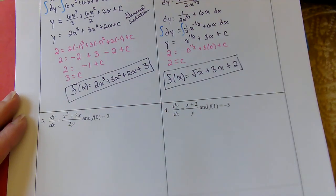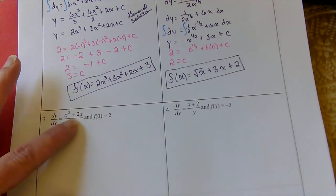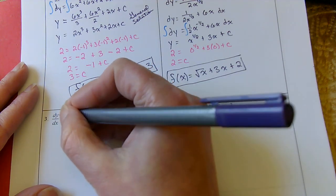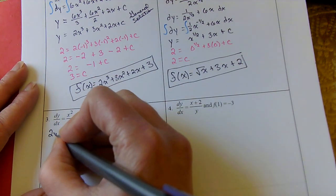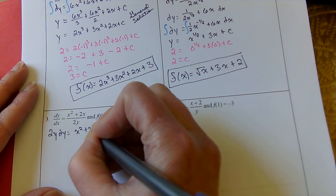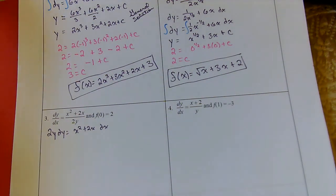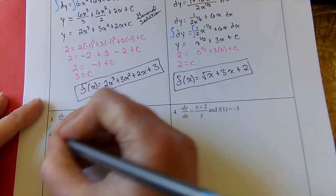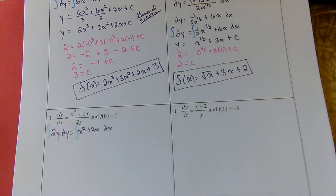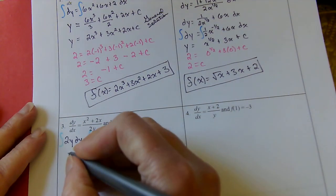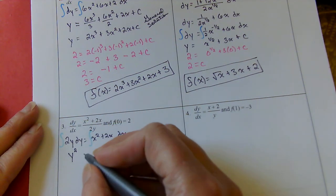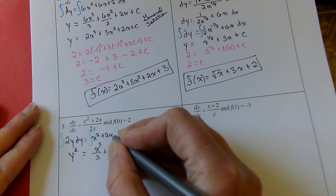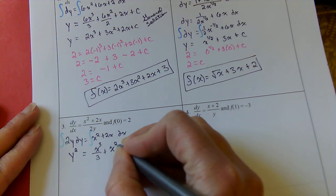In the next two examples, you'll notice that each of them have x and y's in this. So I'm going to do a little cross multiplying. So 2y times dy equals x squared plus 2x dx. Now I've got the y's on one side and the x's on the other. So it's time to take the antiderivative. The antiderivative of 2y would be y squared. Antiderivative of x squared would be x cubed divided by 3. This would be x squared plus c.